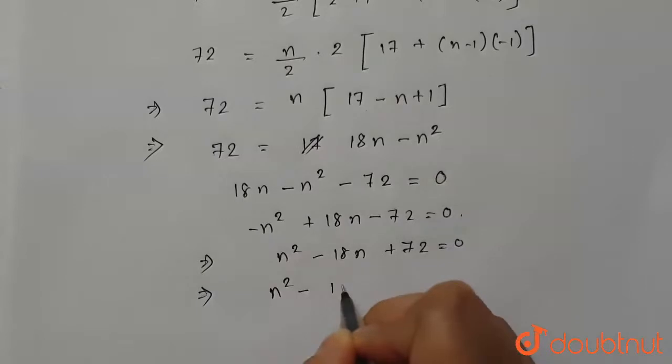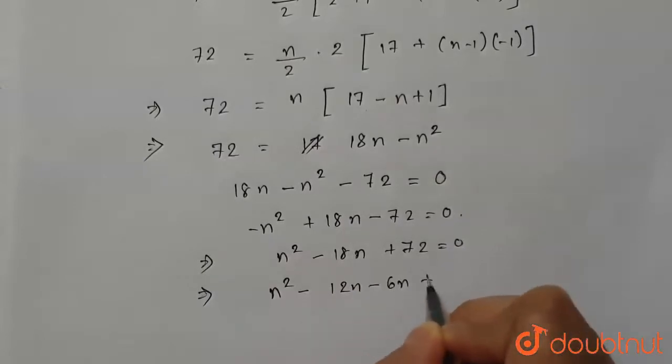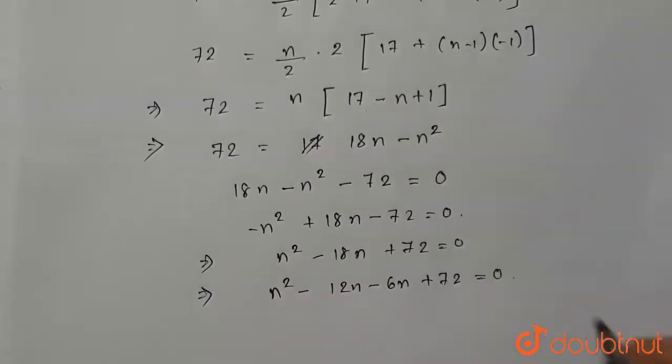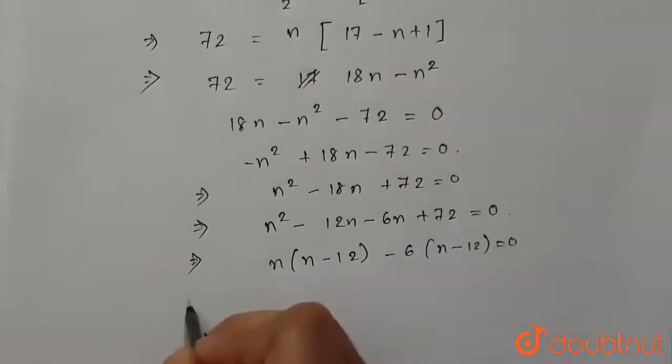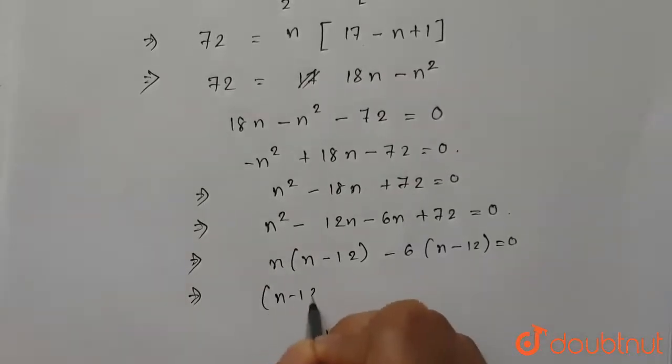Now this can be written as n² - 12n - 6n + 72 = 0. From here we get n(n - 12) - 6(n - 12) = 0.